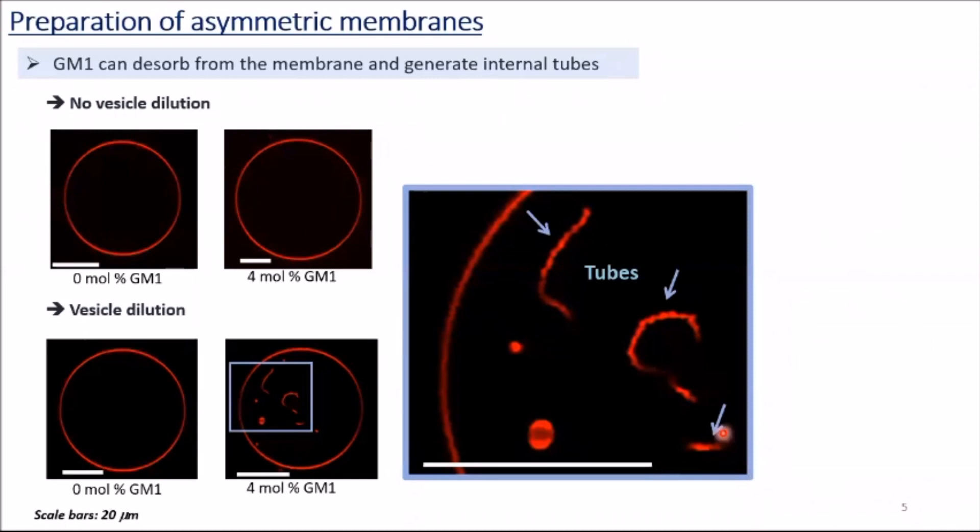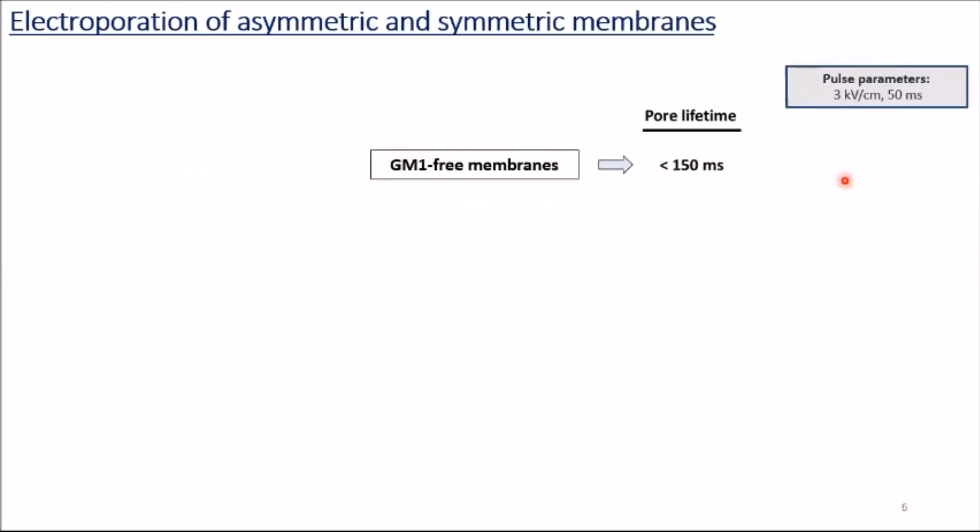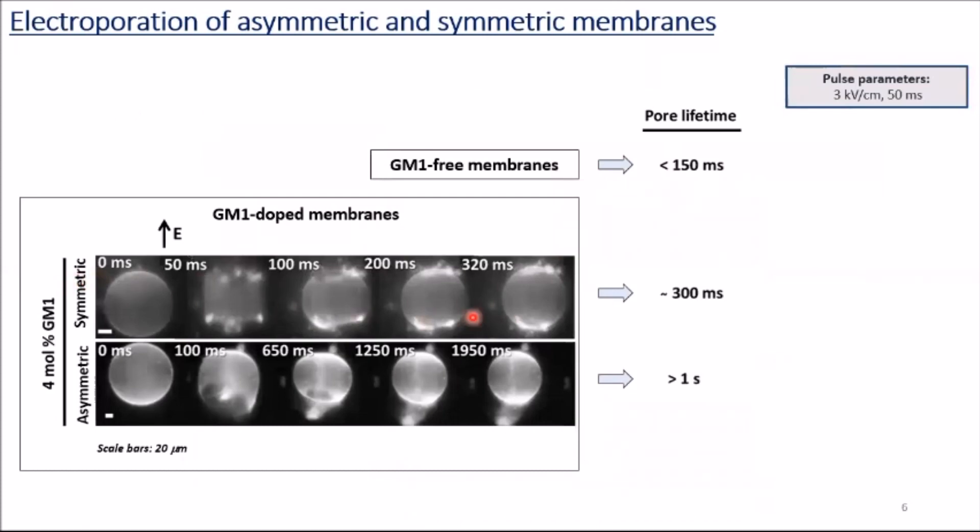Then these GUVs were exposed to electric fields. Electric field parameters are mentioned here. For GM1-free membranes, pore lifetime was less than 150 milliseconds. GM1-doped symmetric GUVs had a little bit longer lifetime, but with the generation of asymmetry, these tubes accumulated in poreated region in time and hinder the pore closure. Then, pore lifetime became more than one second. So, both GM1 concentration and asymmetry increased the pore lifetime.